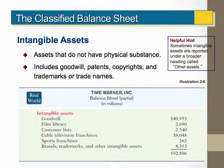The last long-term asset that we normally see on a classified balance sheet are intangible assets. Assets that have no physical substance are normally called intangible assets. They can include goodwill, patents, copyrights, trademarks, trade names, and other items that would fit into this category. We will talk about intangible assets in another chapter, so just keep in mind that these are considered long-term.